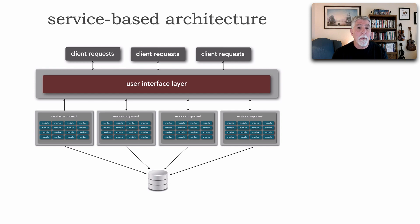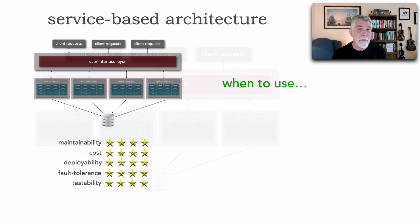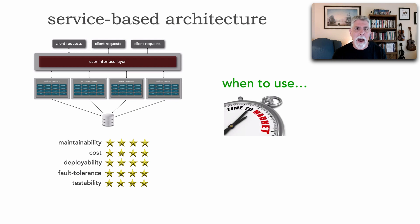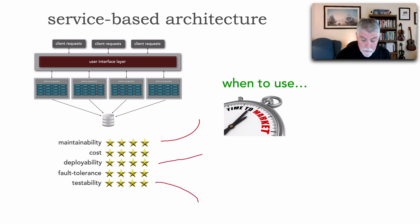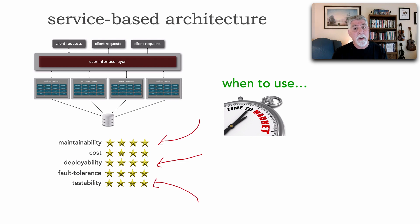Let's get to when to use and when not to use service-based architecture. The times to use it are when we have needs for high time to market and high agility — the ability to respond quickly to change. Maintainability, testability, and deployability are all four stars here — one less than microservices because we have more coarse-grained services, larger testing scopes, and larger deployments which means higher deployment risk. But four stars is still pretty good.